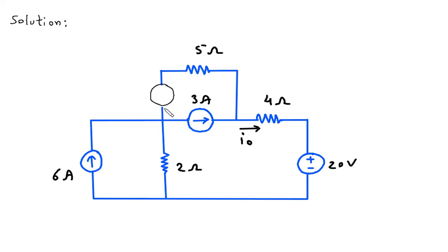So the direction or the polarity of this voltage source will be, this will be positive and this will be negative because of the direction of this current. And voltage is equal to current into resistance. Current is 3A and resistance is 5 Ohm. So this will be 15V.